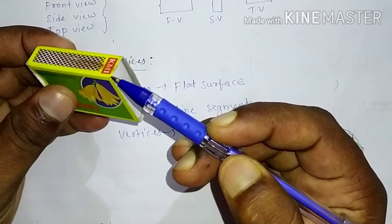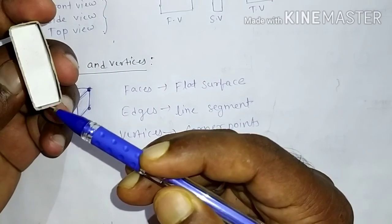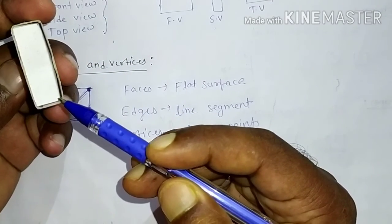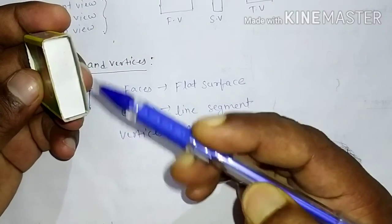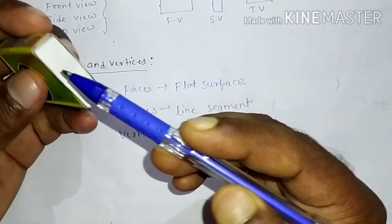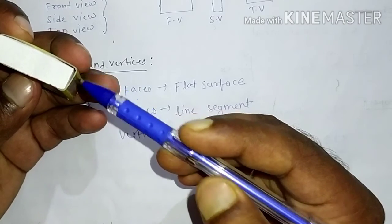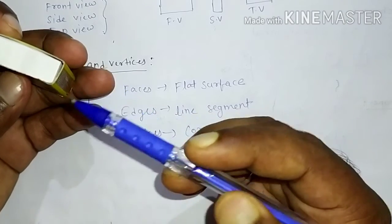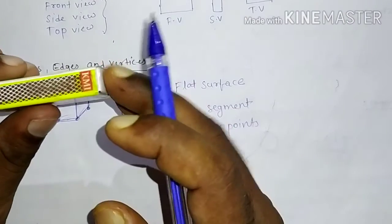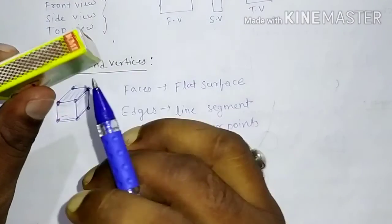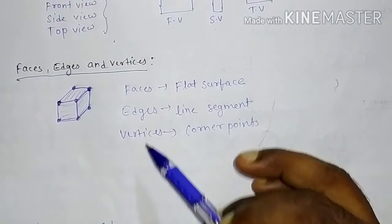Now, how many vertices — corner points? 1, 2, 3, 4 on the front, and 5, 6, 7, 8 on the back — there are 8 corner points, so 8 vertices. Simply we can understand faces, edges, and vertices through this live example.